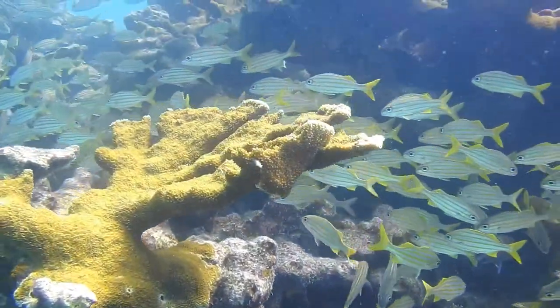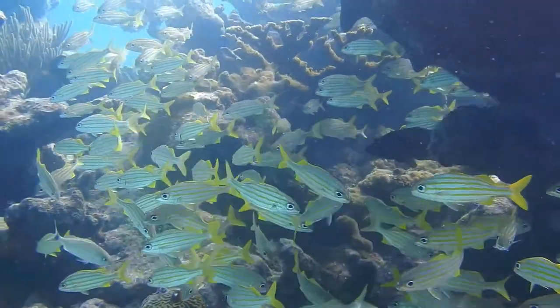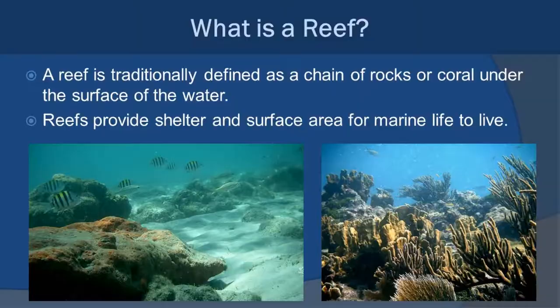The fishing around coral reefs is also really incredible, so this is a really important component to the economy of our state. A reef is traditionally defined as a chain of rocks or coral under the surface of the water. The big factor is that it provides shelter and surface area for marine life to live. You can have a reef that's not a coral reef, or you can have a coral reef — it all depends on what the underlying structure is.